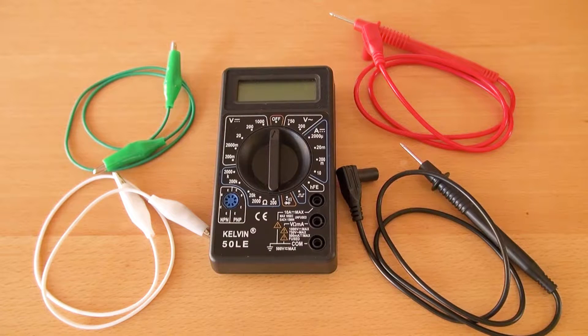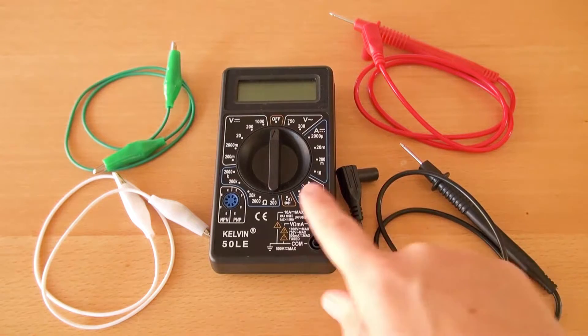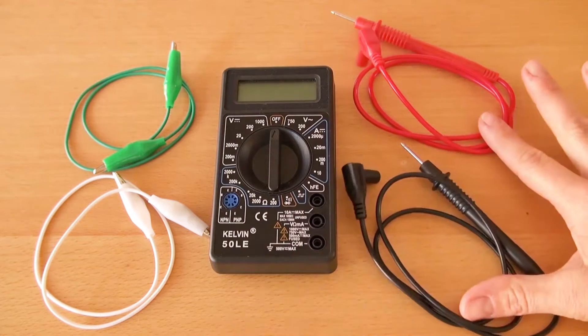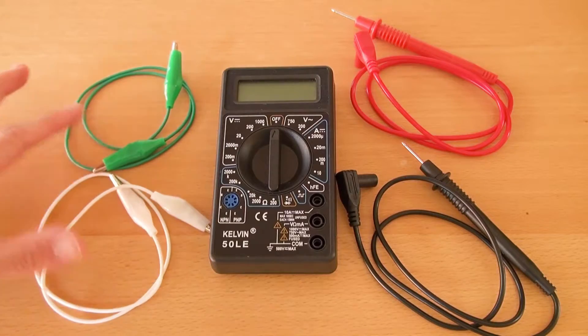To set up the multimeter for your voltage measurements, you will need the multimeter that comes with your kit, the two multimeter leads, as well as the two alligator clip cables.